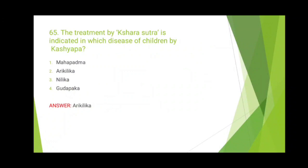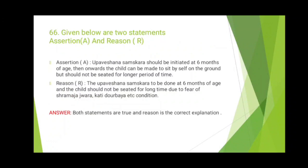The 66th question is an assertion-reason regarding Bala Samskara. Assertion: Upavashana Samskara should be initiated at 6 months of age; from then, a child can be made to sit on the ground but should not be seated for a longer period of time. The reason given is fear of Shrama Jvara, Khadeda, Urbale, etc. Both statements are true and the reason is the correct explanation. Bala Samskaras are three-star points in Kaumarabrittiya — learn what the Samskaras are, how many there are, what age/month they are indicated at, specific indications and contraindications, and their cultural and clinical significance. Homework: note the duration for which Upavashana Samskara should be done.